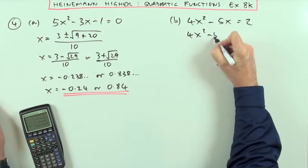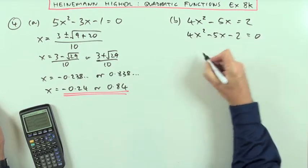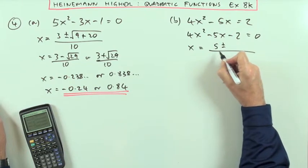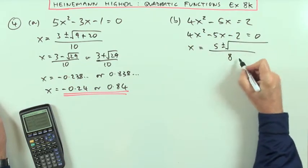So 4x squared minus 5x minus 2 equals 0. Now I can use the formula. So it's going to be the negative of the middle term, plus or minus, 2 times the first one, square root of...